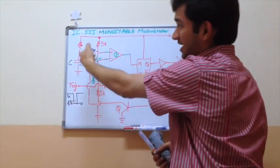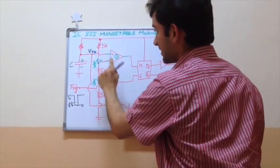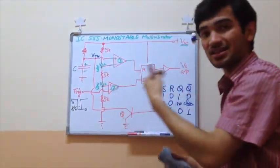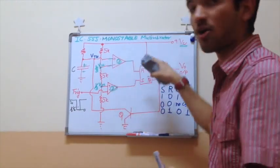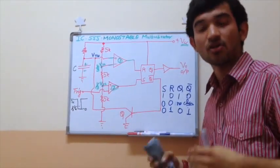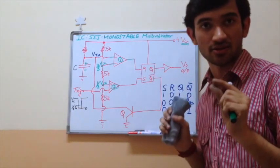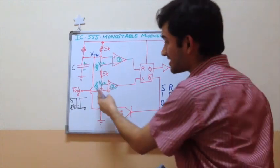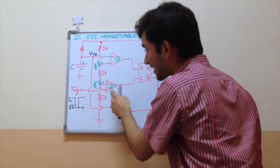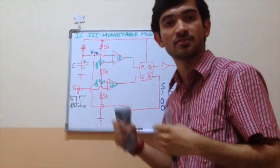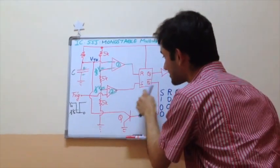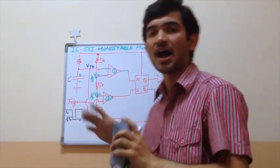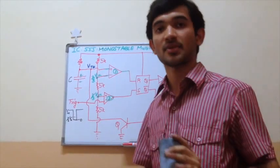Why is the threshold voltage less than 2/3 VCC? If threshold is less than 2/3 VCC, the positive potential is less than 2/3 VCC, so the output of comparator 1 is minus VCC, meaning reset is 0. Similarly, the trigger is VCC which is greater than 1/3 VCC, so the negative potential is higher — the output is minus VCC, meaning set is 0. So initially set is 0 and R is 0, which means I do not change anything in my circuit.